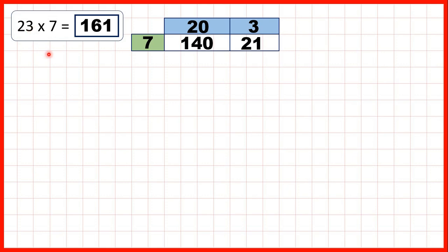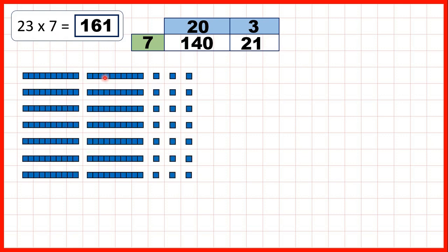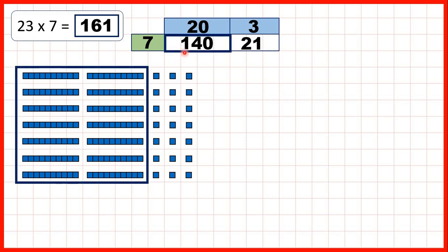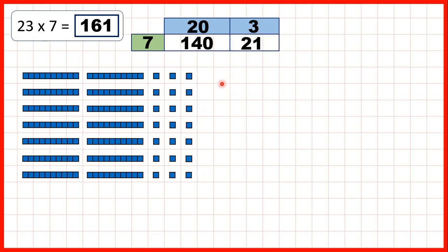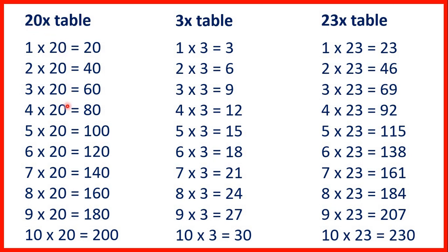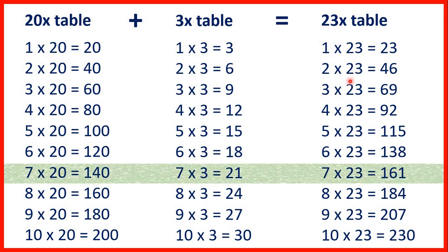Or, we can show 23 as 2 tens and 3 ones, and because we're multiplying by 7, we can show 23 seven times. Then you can see we get 140 because we have 14 tens — so we could regroup those into 100 and 4 tens. And here we have 21, because 7 times 3 is 21. So it's important to understand that if we know our 20 times table and our 3 times table, we can work out our 23 times table. If we add our 20 times table and our 3 times table, we get our 23 times table. So because we needed to work out 7 times 23, we could work out 7 times 20, then work out 7 times 3, and then add up our answers.